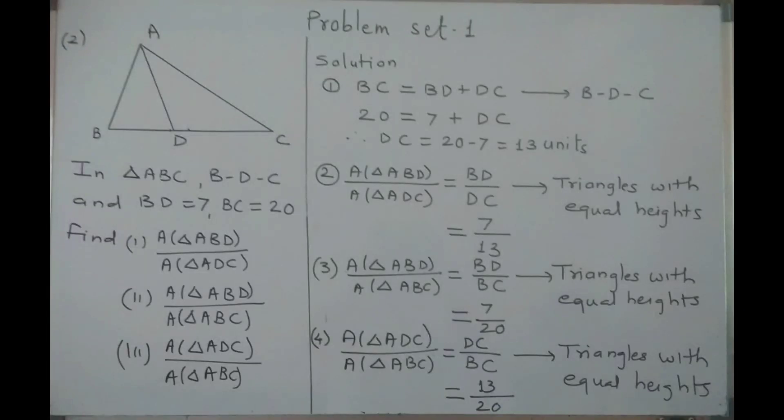Let us solve some examples from problem set 1. Example number 2. In triangle ABC, it is given that BD is equal to 7 and BC is equal to 20. You are asked to find area of triangle ABD upon area of triangle ADC, area of triangle ABD upon area of triangle ABC, and area of triangle ADC upon area of triangle ABC.